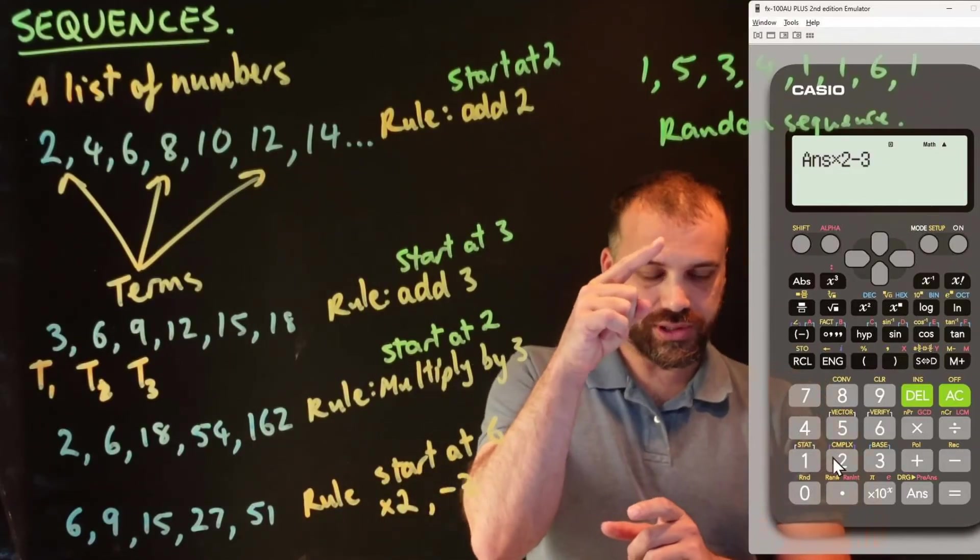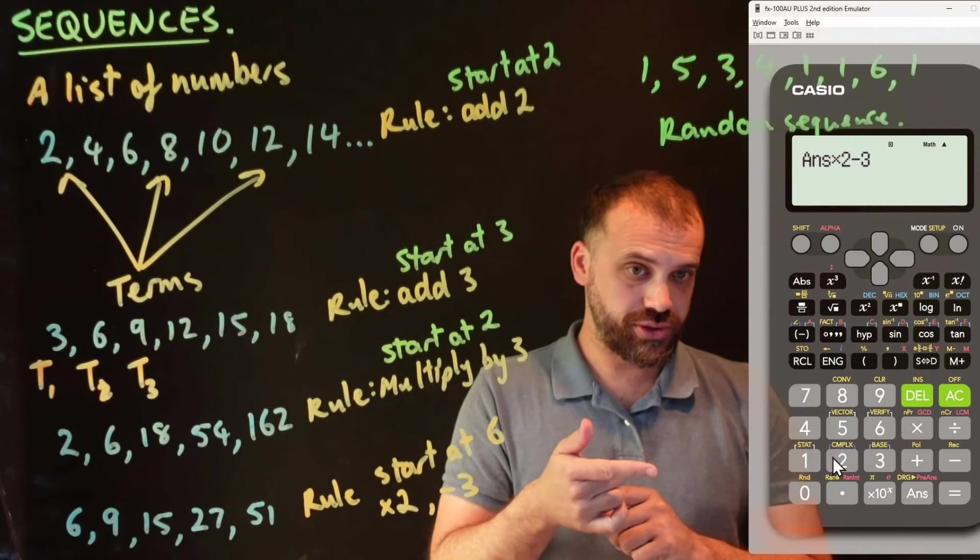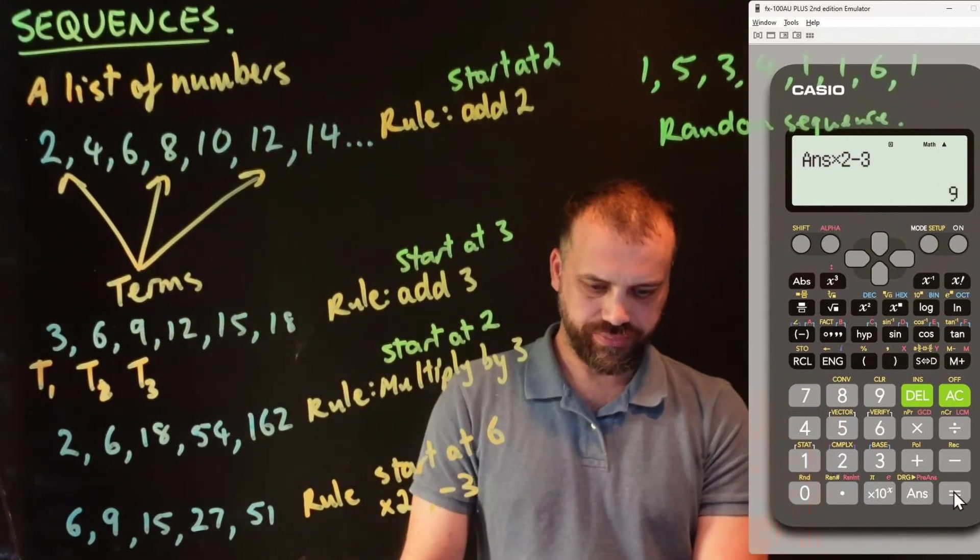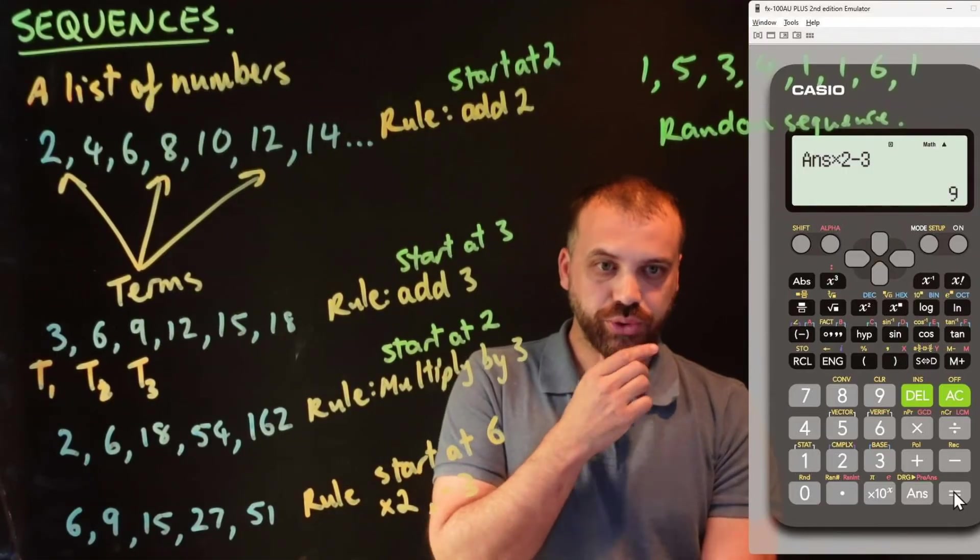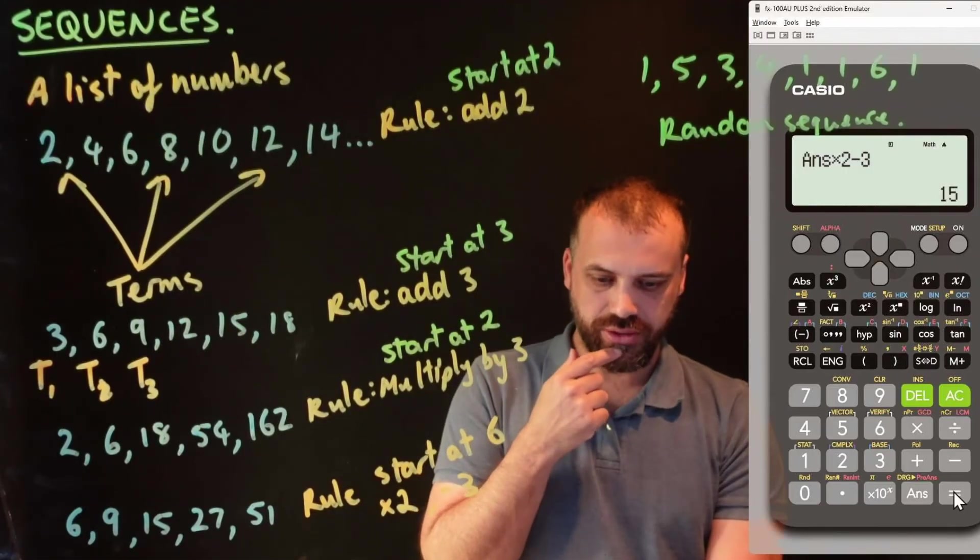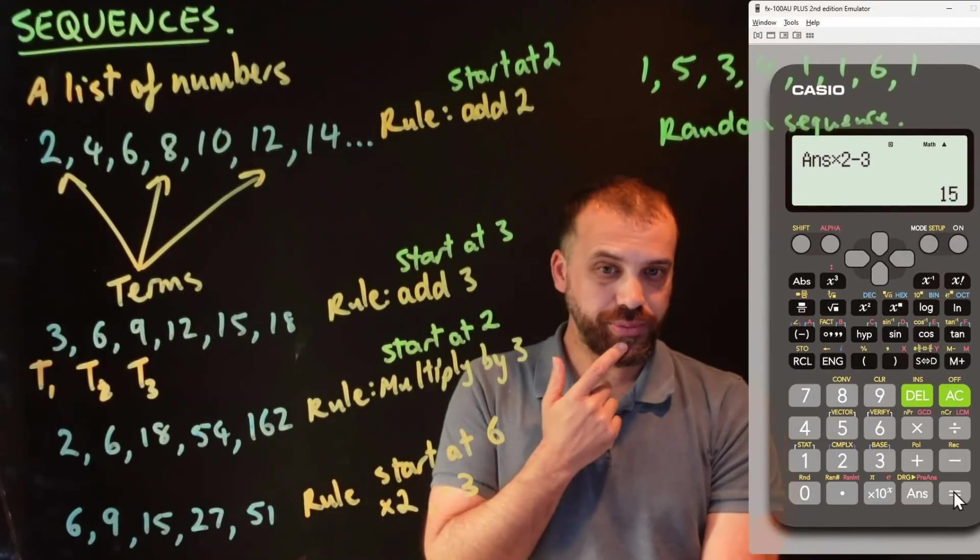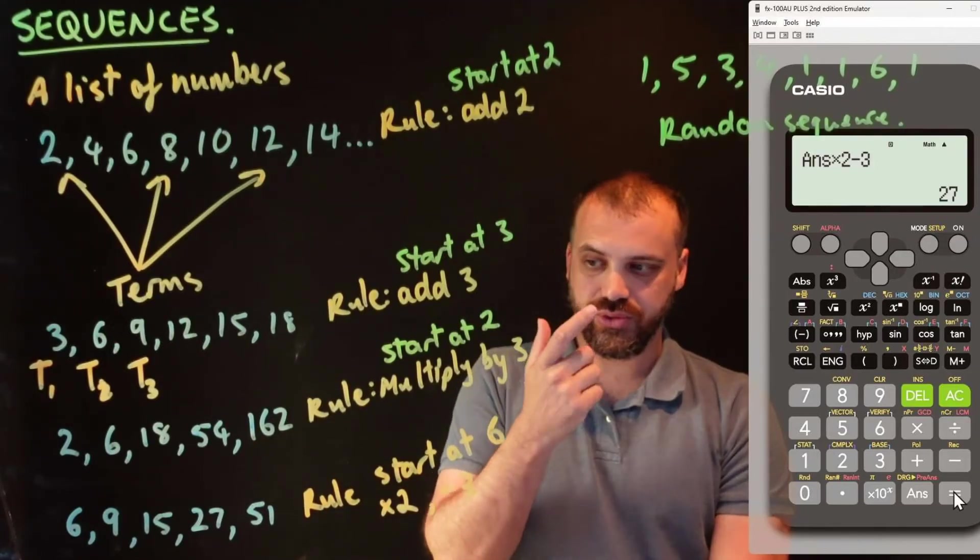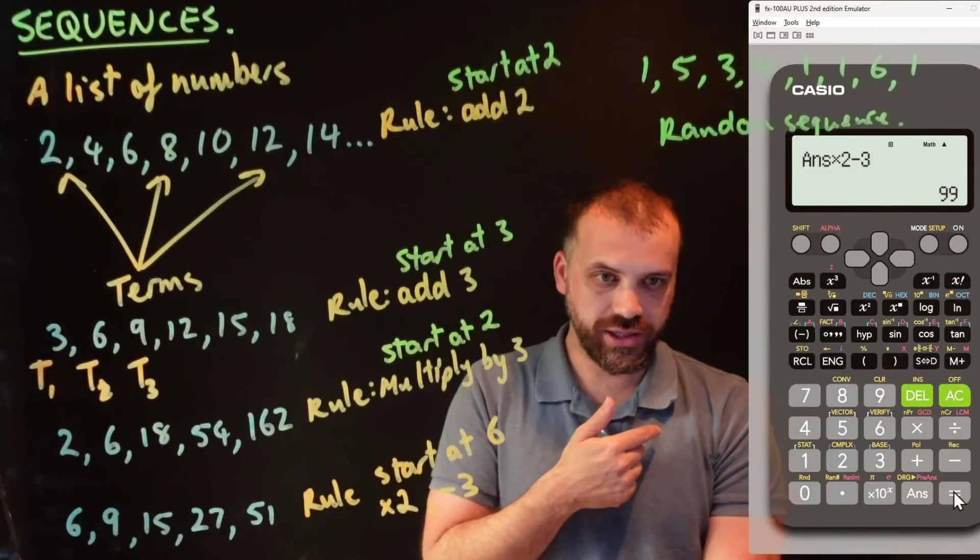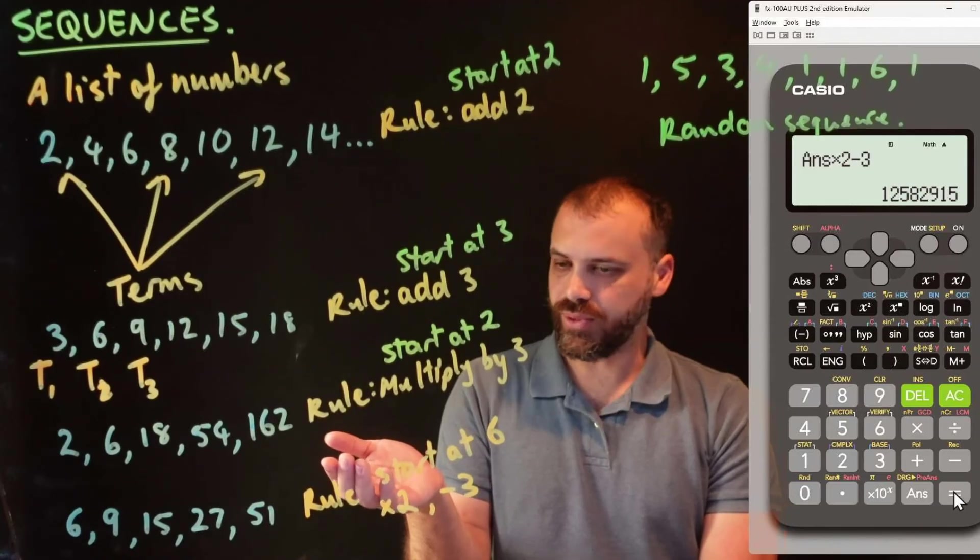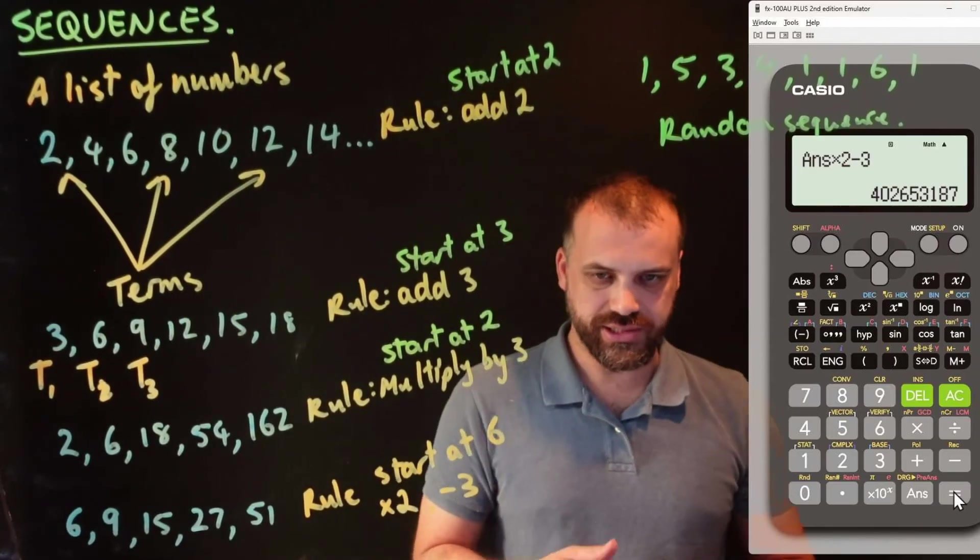Now notice what that's saying. That's saying take the answer and then multiply it by 2 and subtract 3. Now the initial answer was 6. If I do that, I get 9. Watch what happens when I press equals again. 15, because that's taking the previous answer, 9. You've probably done this before. Equals 27, equals 51. I can do this so quickly now and get all the numbers in this. Oh, wow, this sequence gets really big really fast.